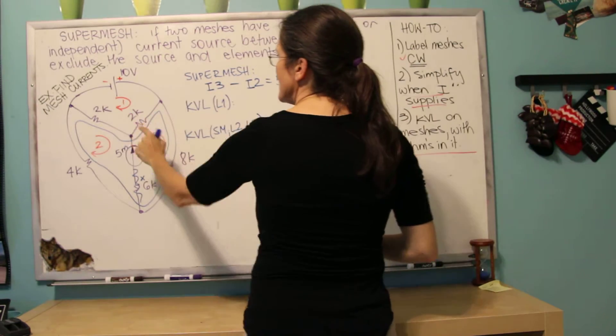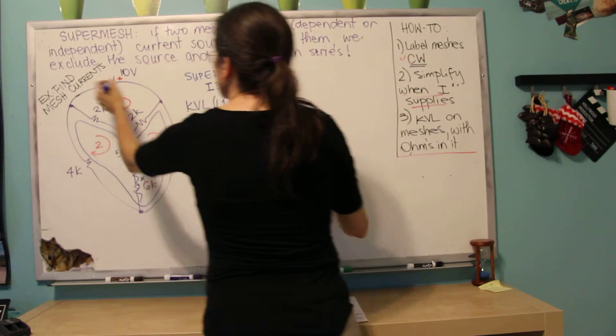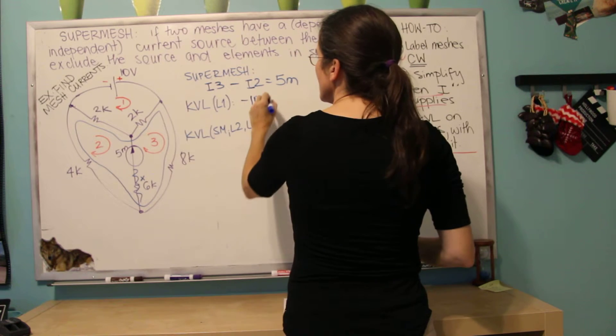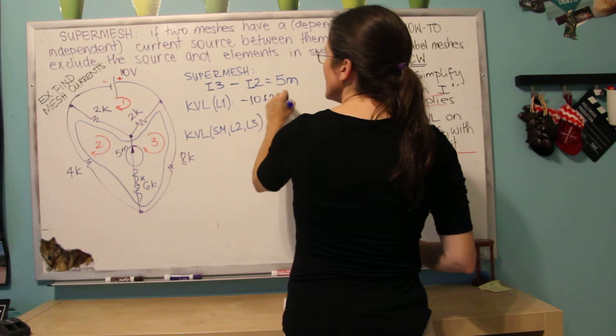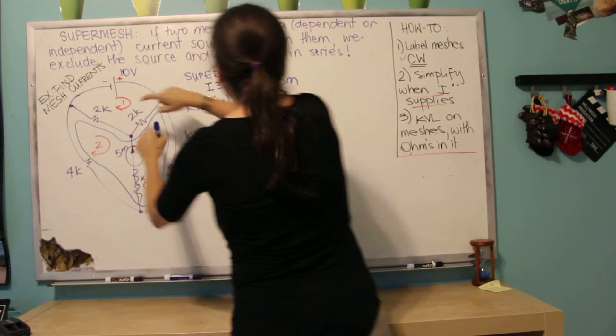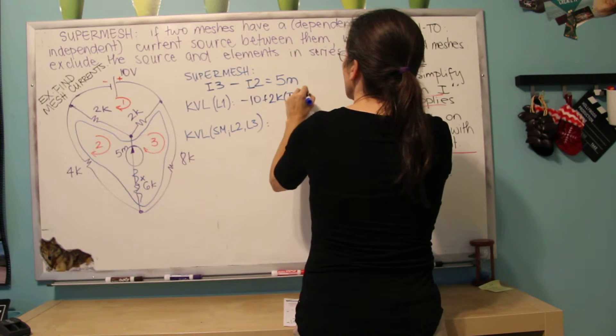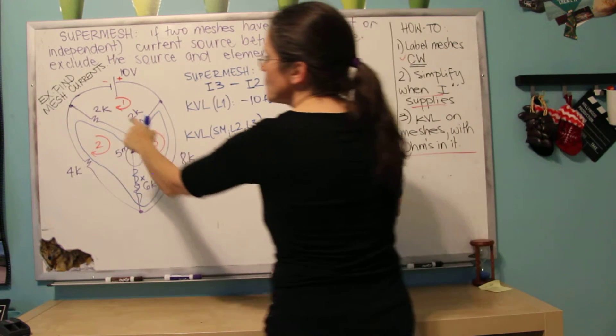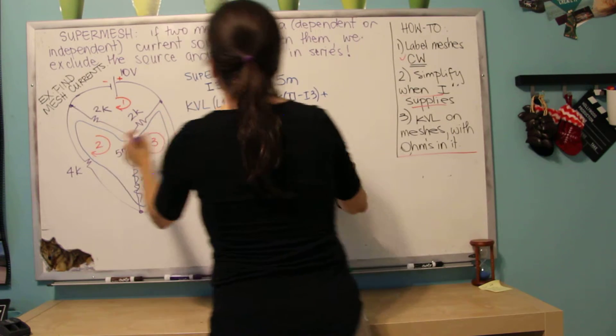So let's start with the first. I'm going to start here and write minus 10 plus 2k. This 2k is I1 minus I3. Plus this 2k here is I1 minus I2.